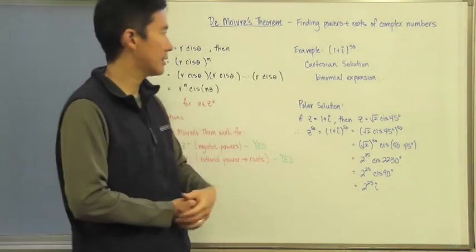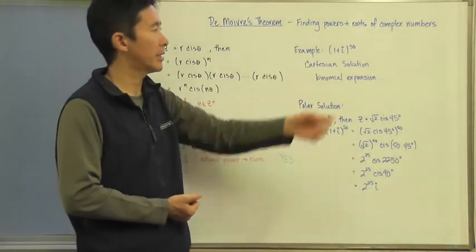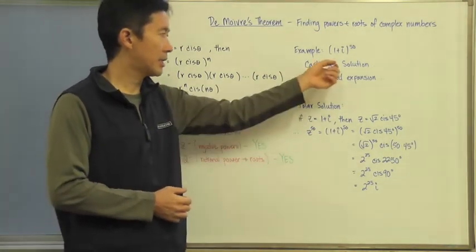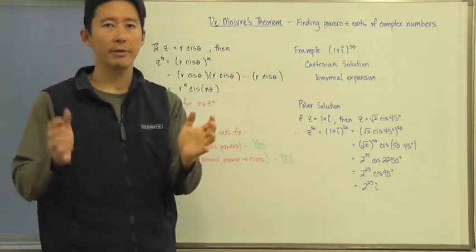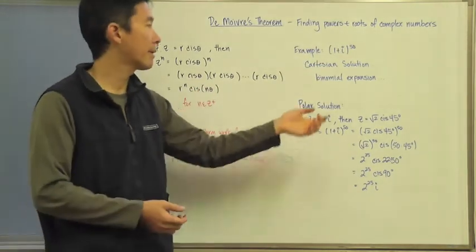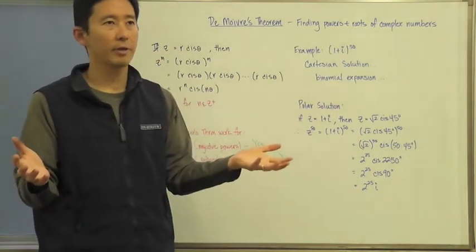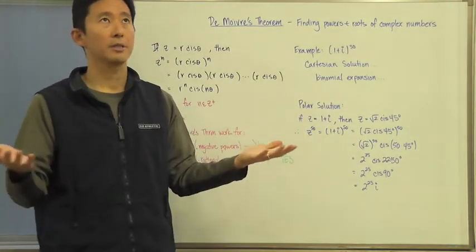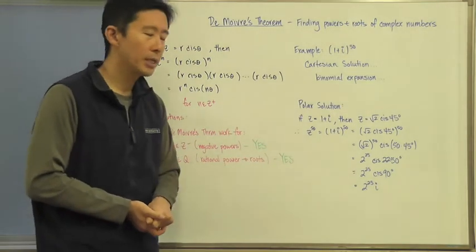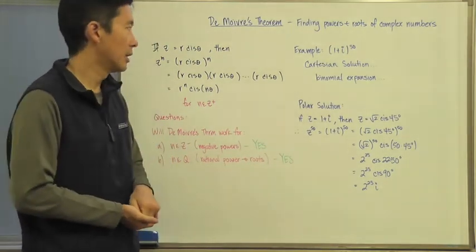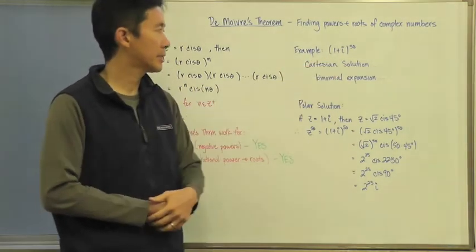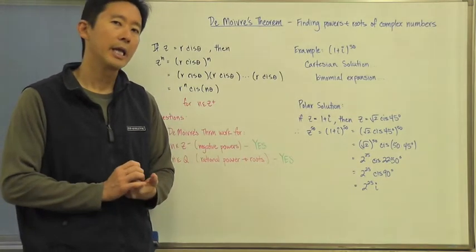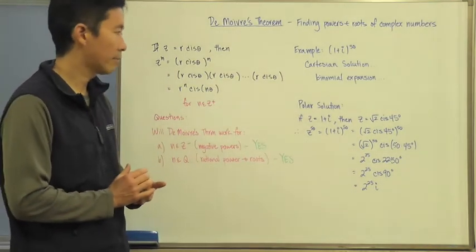So let's take a look at an example here. Say for example, if we wanted to take a look at 1 plus i raised to the 50th power. Now the Cartesian solution, well that means we have to do 1 plus i raised to the 50th power. I'm not going to try to do FOIL on that. We could try to use the binomial expansion, but that's just going to be huge as well. But when we take a look at the polar solution of multiplying out this particular complex number, it's going to be very straightforward for us to find what that product is.